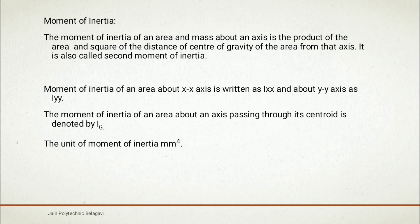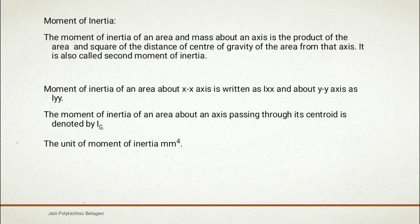Moment of inertia is denoted by capital letter I. About the horizontal axis it is written as I_xx, and about the vertical axis as I_yy. The moment of inertia of an area about an axis passing through its centroid is denoted by I_G. The unit for moment of inertia is mm⁴, or cm⁴, or m⁴.